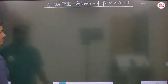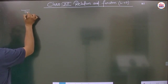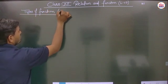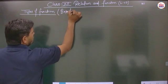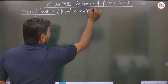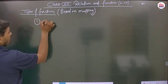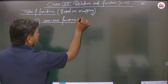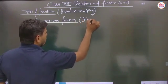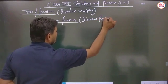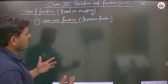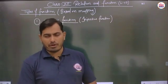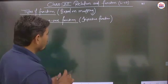So, the basic types of functions based on mapping were discussed in the last video. We will now write the very first function type, known as the one-one function, also called the injective function. Both names refer to the same thing — one-one and injective function are similar names, so there should be no confusion.